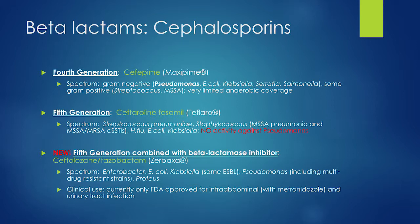Our fourth-generation cephalosporin, cefepime, gives broader gram negative coverage and now includes Pseudomonas coverage. No anaerobic coverage with cefepime, but extremely broad gram negative coverage. We also have a fifth-generation cephalosporin — ceftaroline — which actually adds MRSA coverage, which is quite interesting for a cephalosporin.